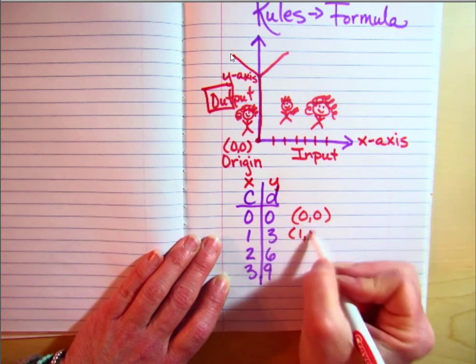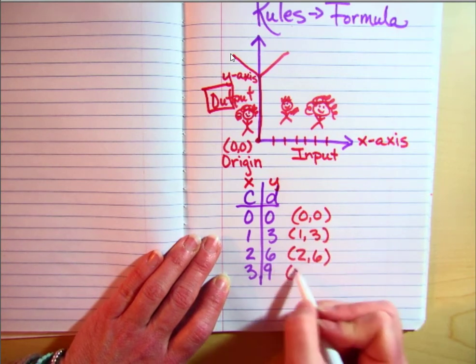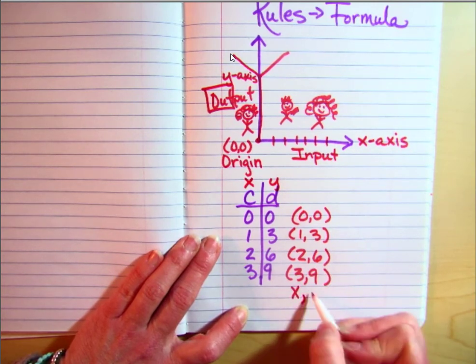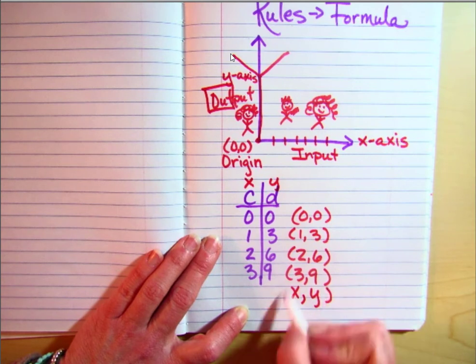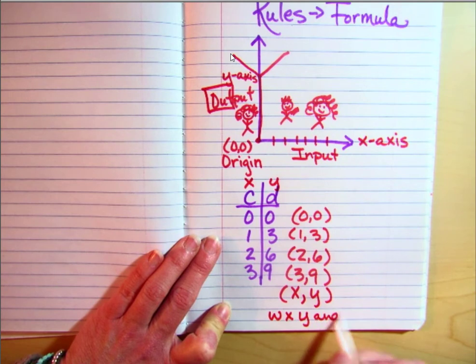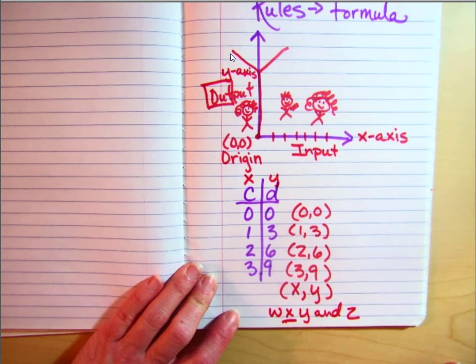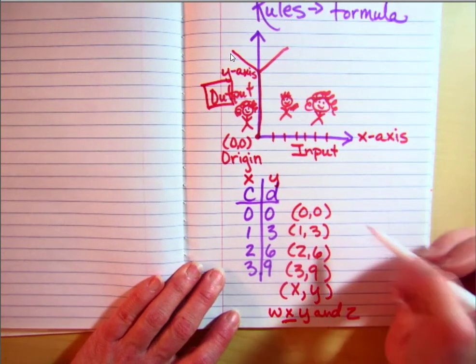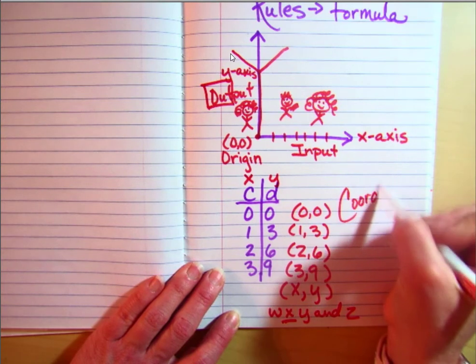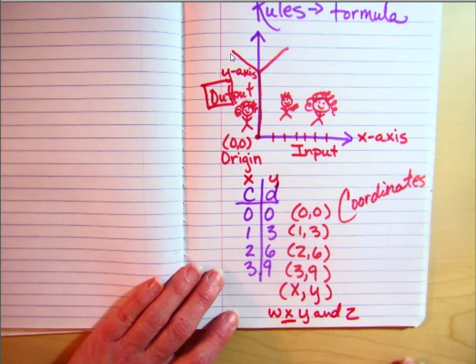Your x is always going to come before your y. Just like when you sing the ABCs: W, X, Y, and Z. X always comes before y. So that's a little trick to help you remember. These are called your coordinates. Coordinates are always going to be x and then y, and they help you plot the points on your graph or help you label points on your graph.